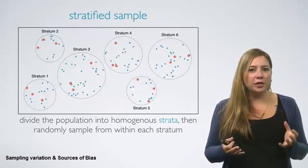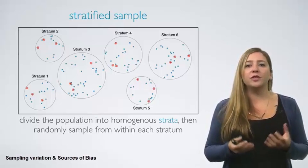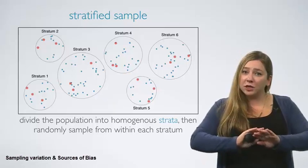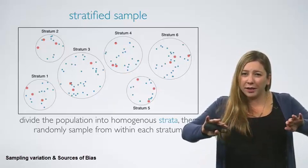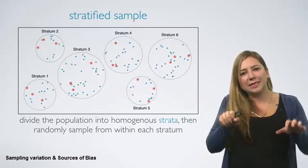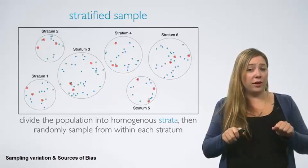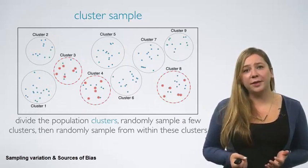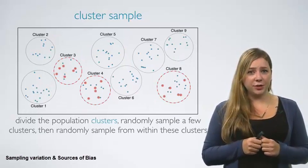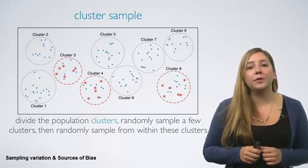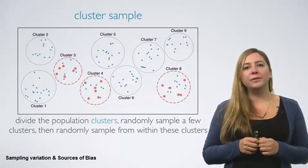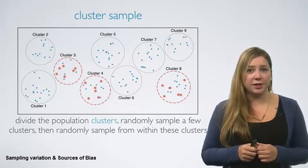For example, if we wanted to make sure both genders are equally represented in a study, we might first divide the population into males and females, and then randomly sample from within each group. In cluster sampling, we divide the population into clusters, randomly sample a few clusters, and then randomly sample from within these clusters.